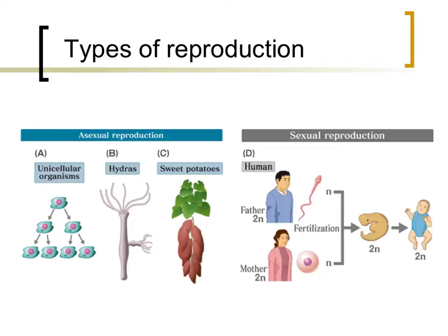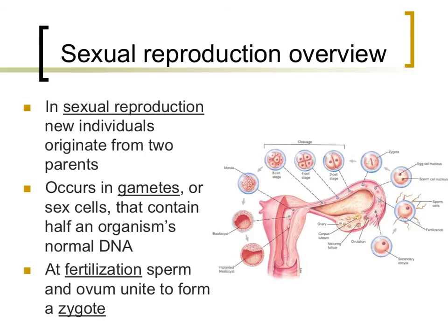The advantages and disadvantages of these different types of reproduction will also be discussed. The term sexual is defined as relating to, produced by, or involving reproduction characterized by the union of male and female gametes. In short, this is the process by which two individuals combine their genetic information to form new offspring. As the definition stated, this process involves gametes, or sex cells. Eggs, scientifically referred to as ova, and sperm are the two types of gametes that humans possess.